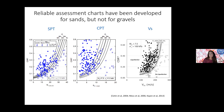Contrary to sands, gravels haven't received the same attention traditionally given to sandy materials. I'm showing an example of the wide range of available triggering tools. We can use field tests — typically we compare demand and supply: we look at penetration resistance or some sort of test indicating the possible resistance of the material against liquefaction, then compare it to the seismic demand to determine whether at that site we have to worry about liquefaction triggering.